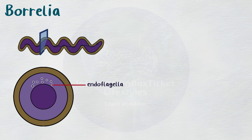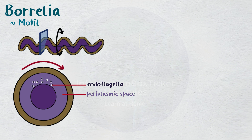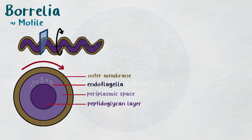Endoflagella — long, thin filaments seen in the periplasmic space of Borrelia species — are what allow them to move about. The peptidoglycan layer and the outer membrane are separated by the rotating filaments, which give the bacteria a corkscrew-like motion as it moves ahead.